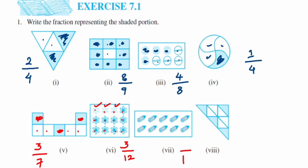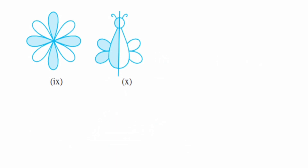In the seventh figure we have roughly ten pencils, and all ten pencils are colored, so the answer is ten upon ten. For the eighth figure, we have triangles: one, two, three, four, five, six, seven, eight, nine — out of nine, how many are shaded? One, two, three, and four. So the answer is four upon nine.